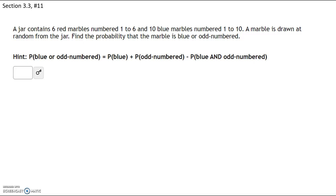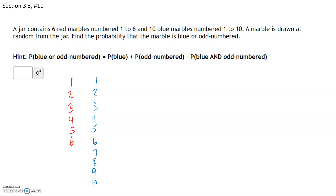A jar contains six red marbles numbered one through six and ten blue marbles numbered one through ten. A marble is drawn at random — find the probability that the marble is blue or odd numbered. The very first thing we need to do is list out the marbles. Red marbles: 1, 2, 3, 4, 5, 6. Blue marbles: 1, 2, 3, 4, 5, 6, 7, 8, 9, 10. Now label all of them by color.